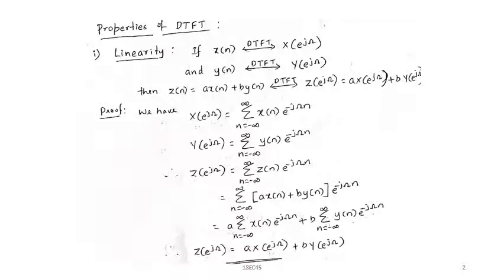First, we will discuss the linearity property. For the linearity property we use more than two signals. For a linearity condition, it should satisfy the law of superposition — that is, the weighted sum of input should be equal to the weighted sum of output. I will consider two signals: x(n) and y(n). If x(n) has DTFT X(e^{j\omega}), and y(n) has DTFT Y(e^{j\omega}),...